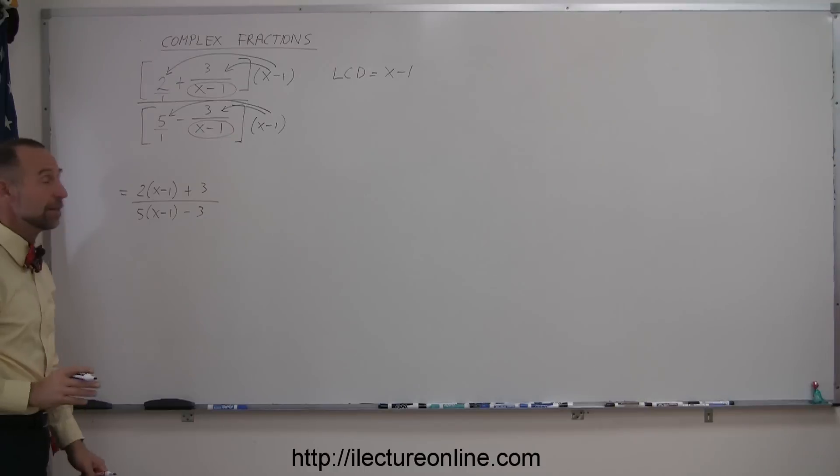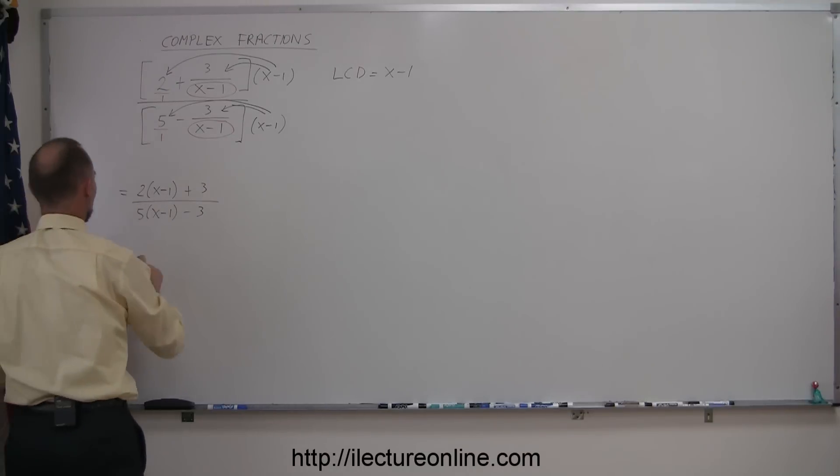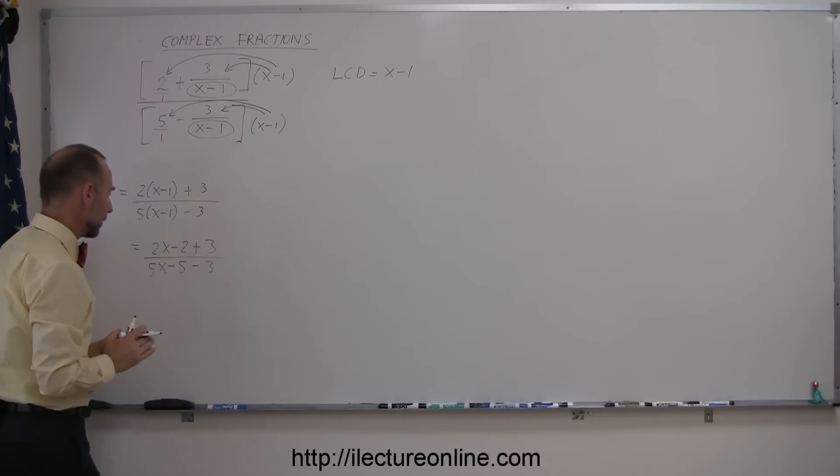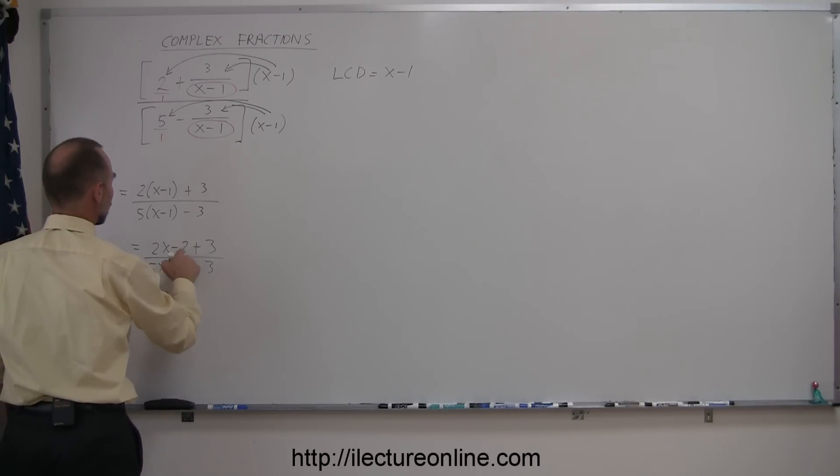Okay, then I get rid of the parentheses. So this is equal to 2x minus 2 plus 3, and this is 5x minus 5 minus 3. Then combining like terms, this becomes 2x plus 1, and the denominator is 5x minus 8.